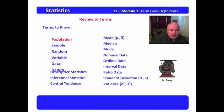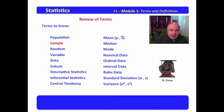The first of these is population. Population is every element in a universe of interest. Sample is a portion of a population.